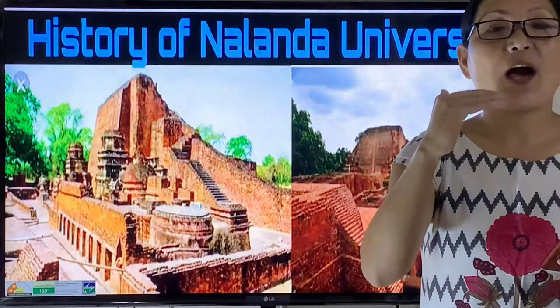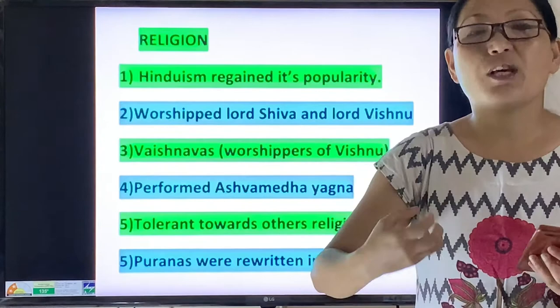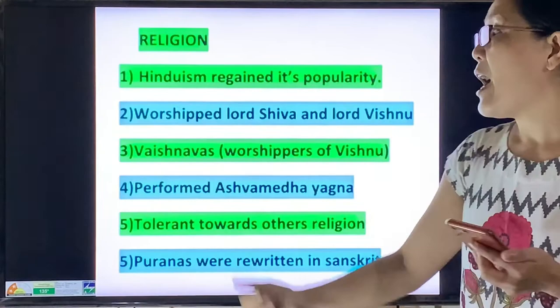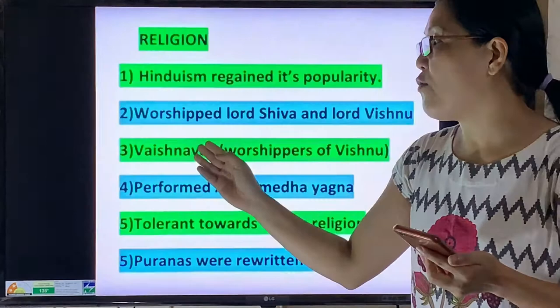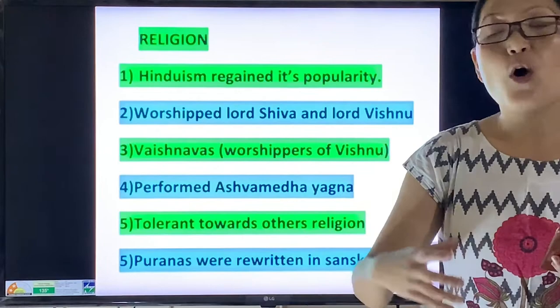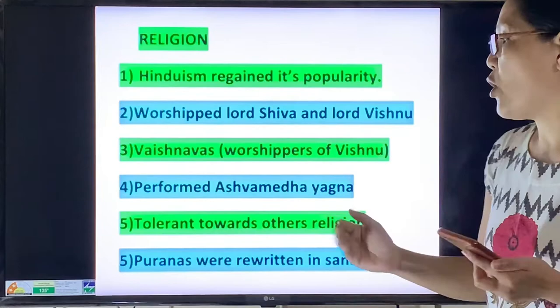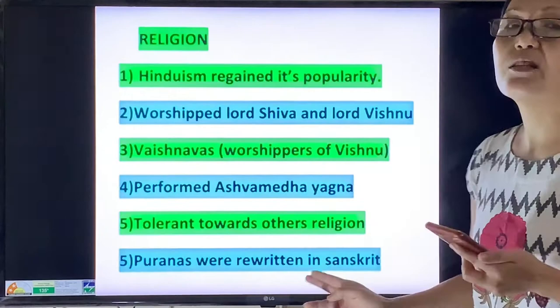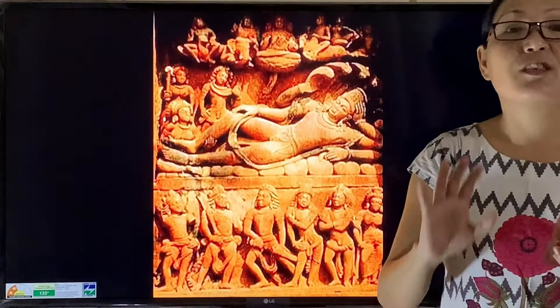Regarding religion during the Gupta period: the Gupta kings revived Hinduism, and Hinduism regained its popularity. The Hindus worshipped Lord Shiva and Vishnu. Most of the Gupta kings were followers of Vaishnavism, meaning worshippers of Lord Vishnu. The Gupta kings performed Ashwamedha Yagna, or horse sacrifice. Although they were staunch followers of Hinduism, they showed tolerance towards other religions. The Puranas were also rewritten in Sanskrit during the Gupta period.